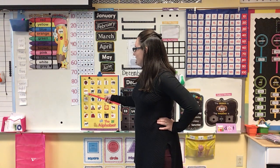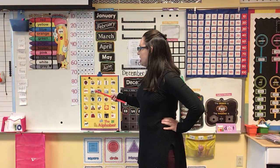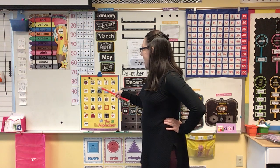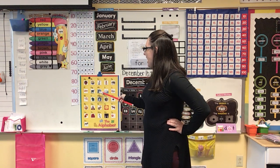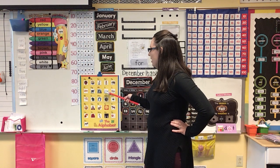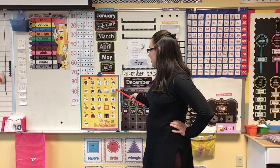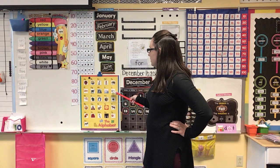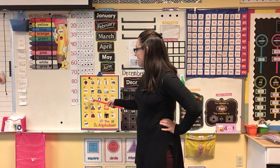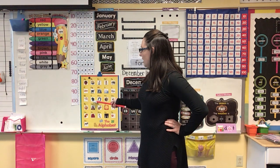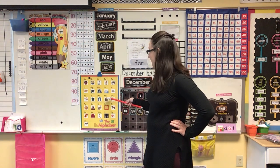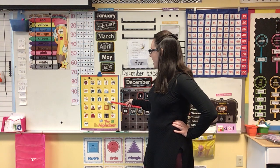F, fish, F. G, goat, G or J. H, house, H. I, igloo, I or I. J, jump rope, J. K, kite, K. L, leaf, L. M, magnet, M. N, nest, N.